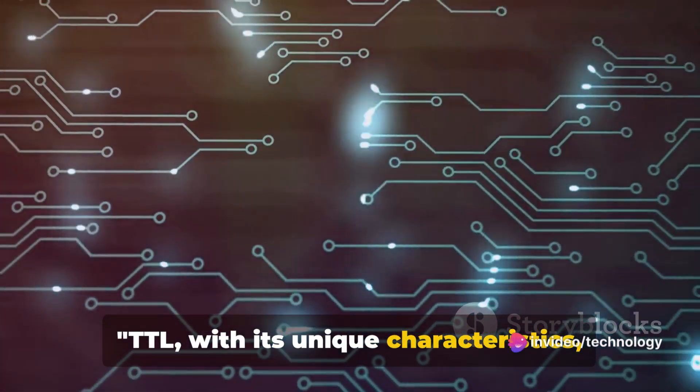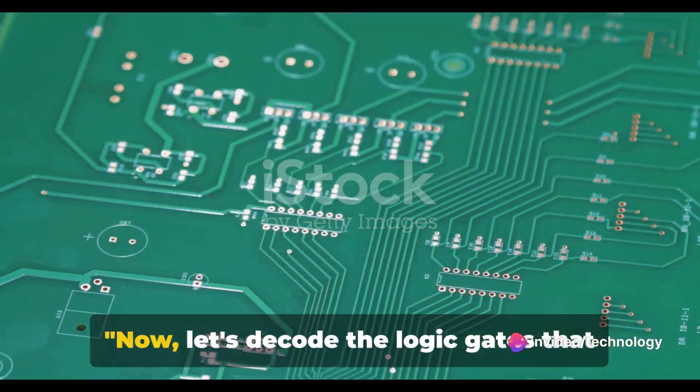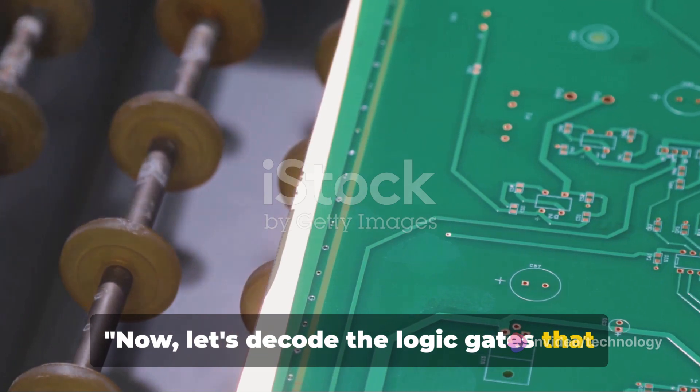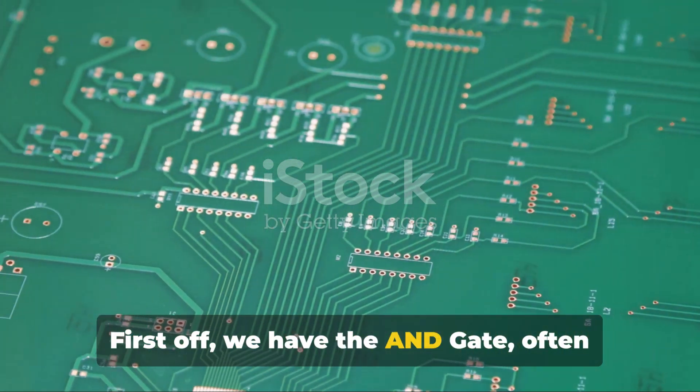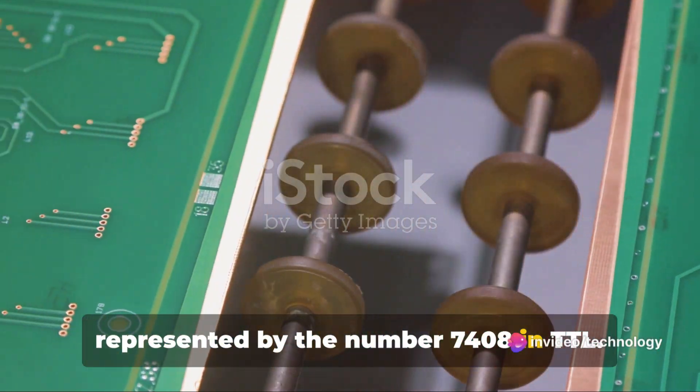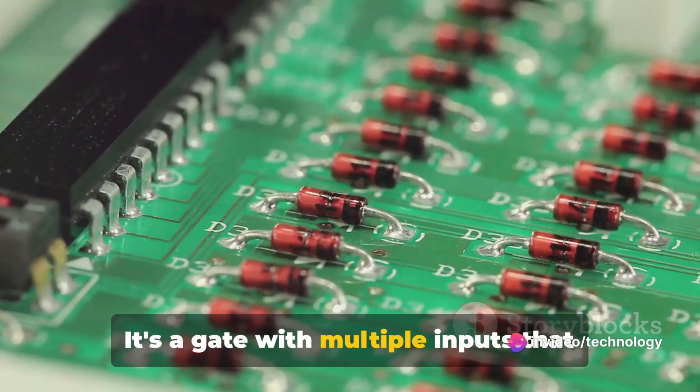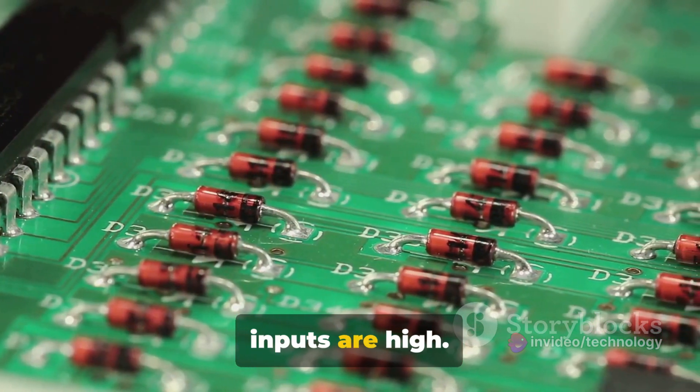TTL, with its unique characteristics, has been a game-changer in the field of digital systems. Now, let's decode the logic gates that form the building blocks of TTL. First off, we have the AND gate, often represented by the number 7408 in TTL. It's a gate with multiple inputs that produces a high output only when all inputs are high.